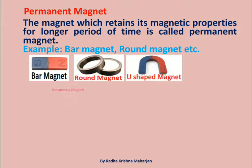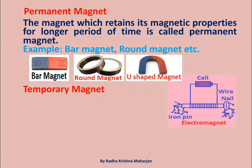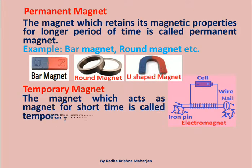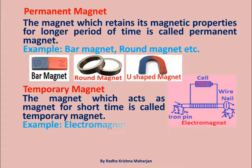Temporary Magnet: The magnet which acts as a magnet for a short time is called a Temporary Magnet. Example: Electromagnet.